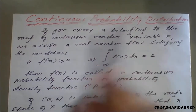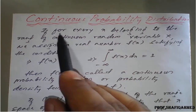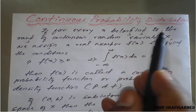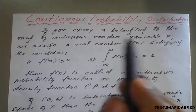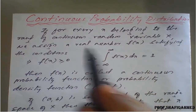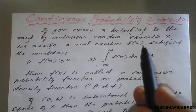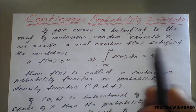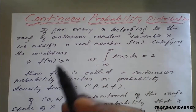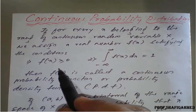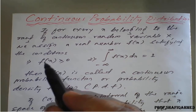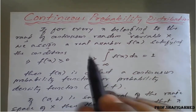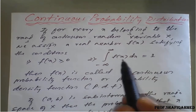For continuous probability distribution, for every x belonging to the range of a continuous random variable X, we assign a real number f(x), maybe it is also written as p(x), satisfying two conditions. In the discrete case, the first condition is p(x) greater than or equal to 0, and the second is summation.